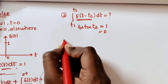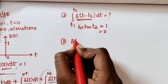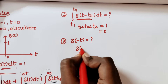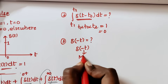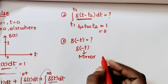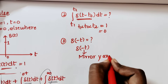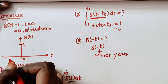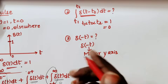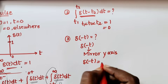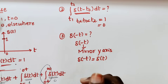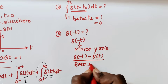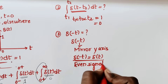Here comes the third property. What is the value of δ(−t)? δ(−t) means we are mirroring the signal across the y-axis. Look at the signal — even if you mirror it, it will be equal to δ(t) only. So δ(−t) equals δ(t). This is an important property. From this, we can conclude that δ(t) is an even signal.